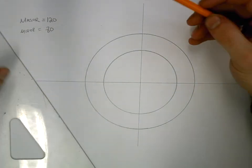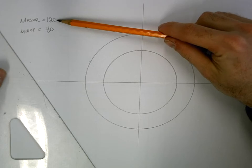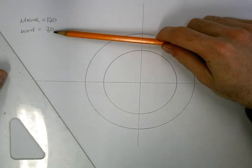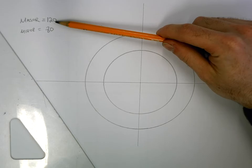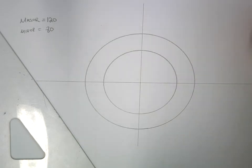Alright, so what we're doing here is we're drawing an ellipse. We're giving the major axis of 120, we're giving the minor axis of 80. So that means we have a radius 60 for our large circle, and we have a radius 40 for our smaller circle.